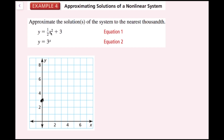If I plug in x equals 1, I get one half of one squared plus 3 equals 3.5. Plugging in x equals 2: half of 4 plus 3 equals 5. Plugging in x equals 3: half of 9 is 4.5 plus 3 is 7.5. That's all that will fit on this graph, so I'll sketch the parabola.